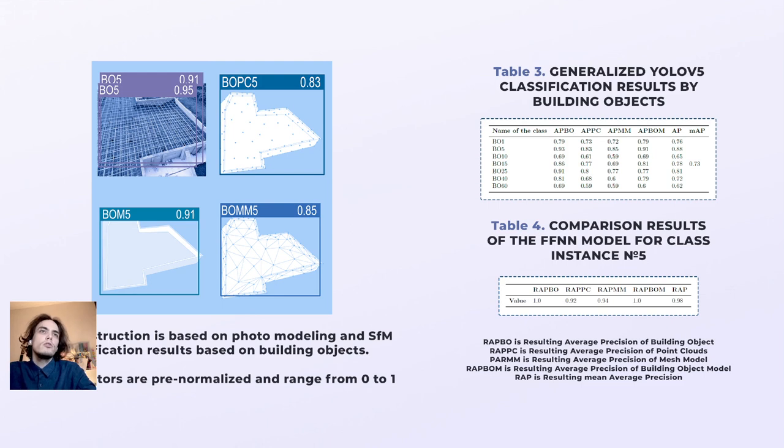The YOLO v5 model had a fast learning training process, 42 minutes for 512 iterations, and achieved a mean average precision (MAP) of 0.73 while also classifying building objects by class and derivative models.